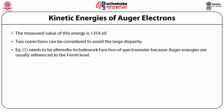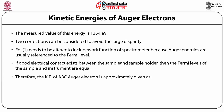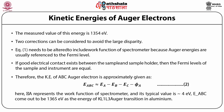We also need to include the work function of the spectrometer because Auger energies are usually referenced to the Fermi level. If good electrical contact exists between the sample and the sample holder, then the Fermi levels of the sample and instrument are equal. Therefore, the kinetic energy of Auger electrons is approximately given as: E_ABC = EA − EB − EC − φ_A (Equation 2). Here φ_A represents the work function of the spectrometer, with a typical value of 4 eV. E_ABC comes out to be 1365 eV for the K, L1, L3 Auger transition in aluminum.